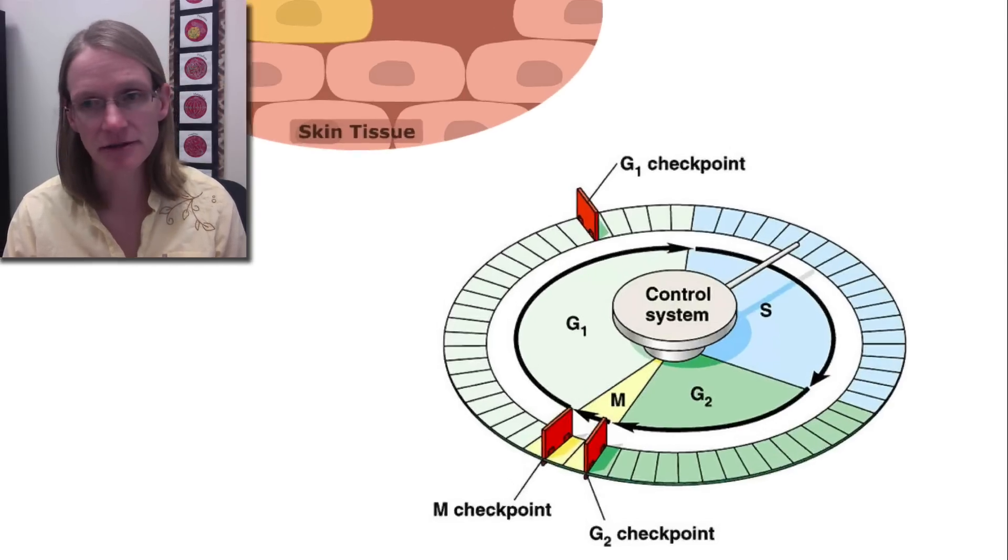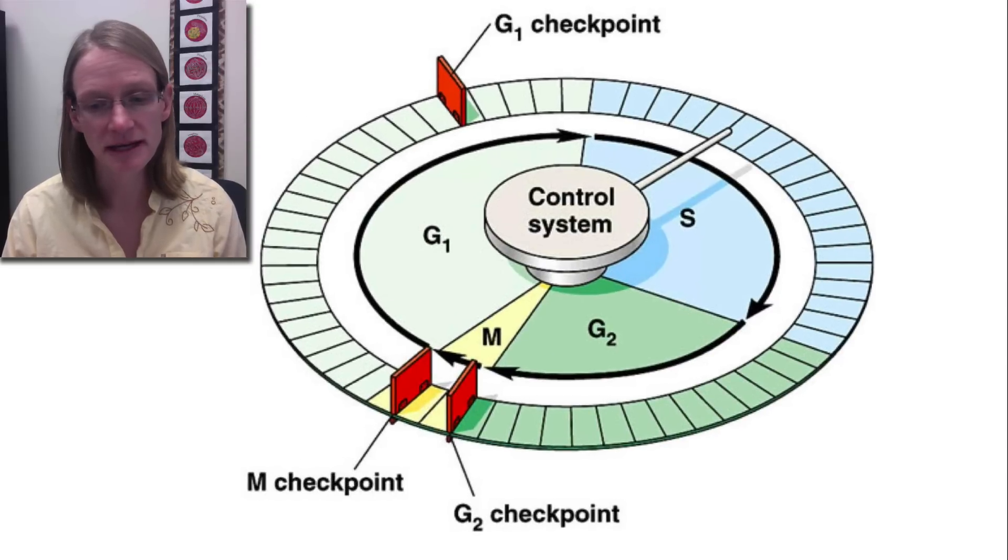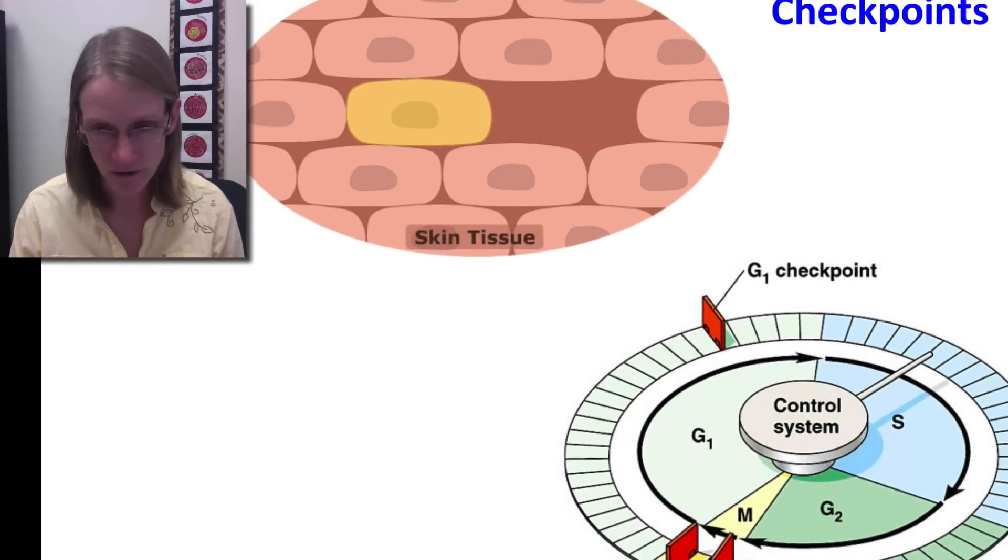And so as you can see here, we have three particular checkpoints. We have the G2 checkpoint that occurs right at the end of G2. We have the G1 checkpoint that occurs fairly close to the end of G1. And we, of course, have the M checkpoint that occurs in the mitotic phase. And so we're going to talk a little bit about each of these things and how they work.